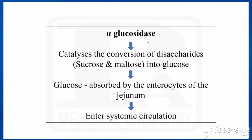This alpha-glucosidase enzyme catalyzes the conversion of disaccharides — that is sucrose and maltose — into monosaccharides, that is glucose. That glucose is finally absorbed by the enterocytes of the jejunum and enters into the systemic circulation.